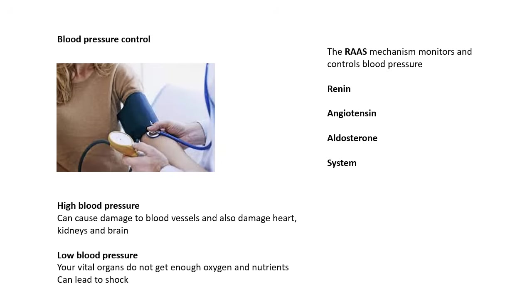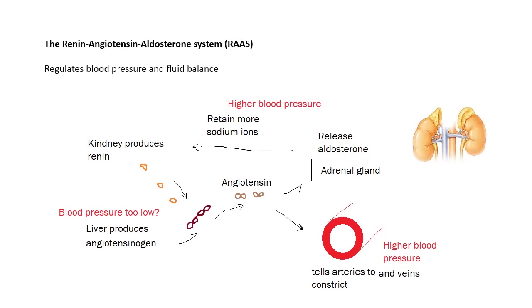The renin-angiotensin-aldosterone system. This is a very simple version of it. The renin-angiotensin-aldosterone system regulates blood pressure and fluid balance. Let's say your blood pressure is too low.